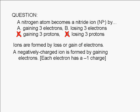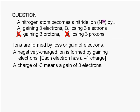A negatively charged ion is formed by gaining electrons. Remember that each electron has a charge of negative one. The number you see written on the upper right-hand corner is the charge of the ion. Therefore, the ion given here — the nitride ion — is a negatively charged ion. Since the charge of a nitride ion is negative three, it is formed when a nitrogen atom gains three electrons. The correct answer is A.